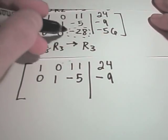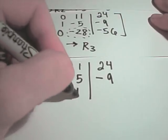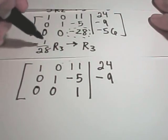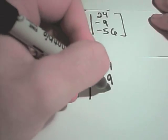So let's see, if we divide the third row by negative 28, I'll get 0, 0, 1, and negative 56 times negative 1 over 28 is going to give me a positive 2.